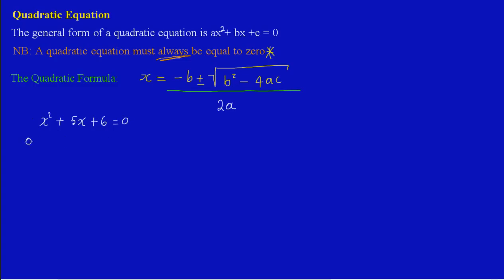So a would be equal—first we identify our a is 1, b is equal to 5, and c is equal to 6. So now in solving, my formula states that x is equal to—